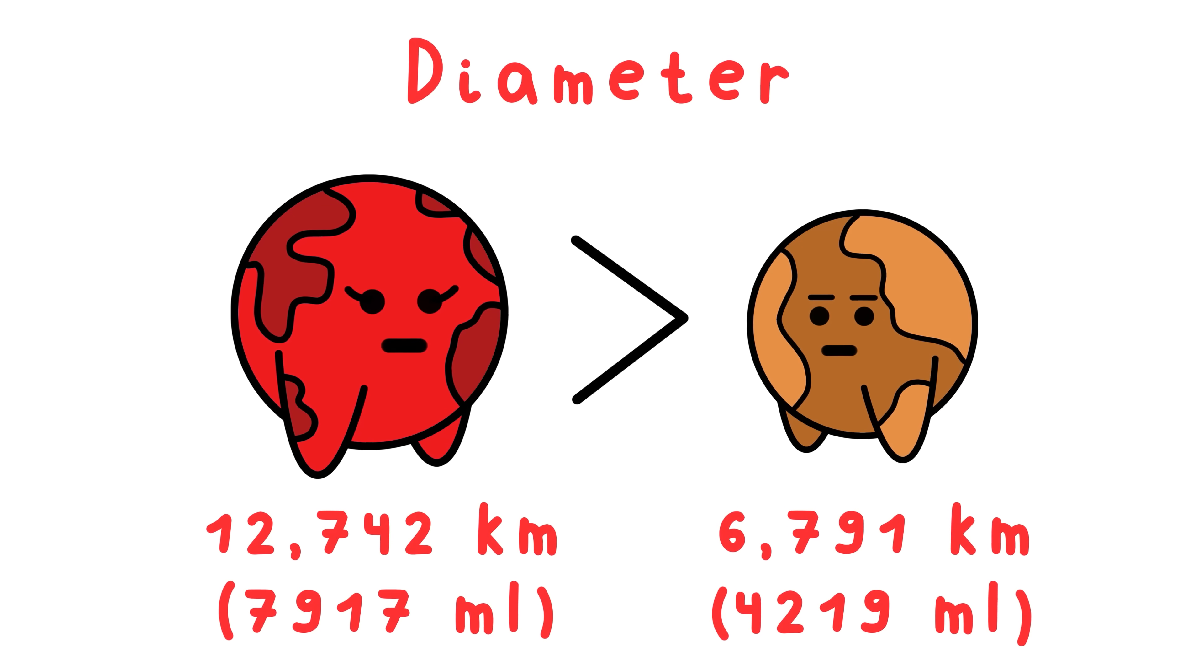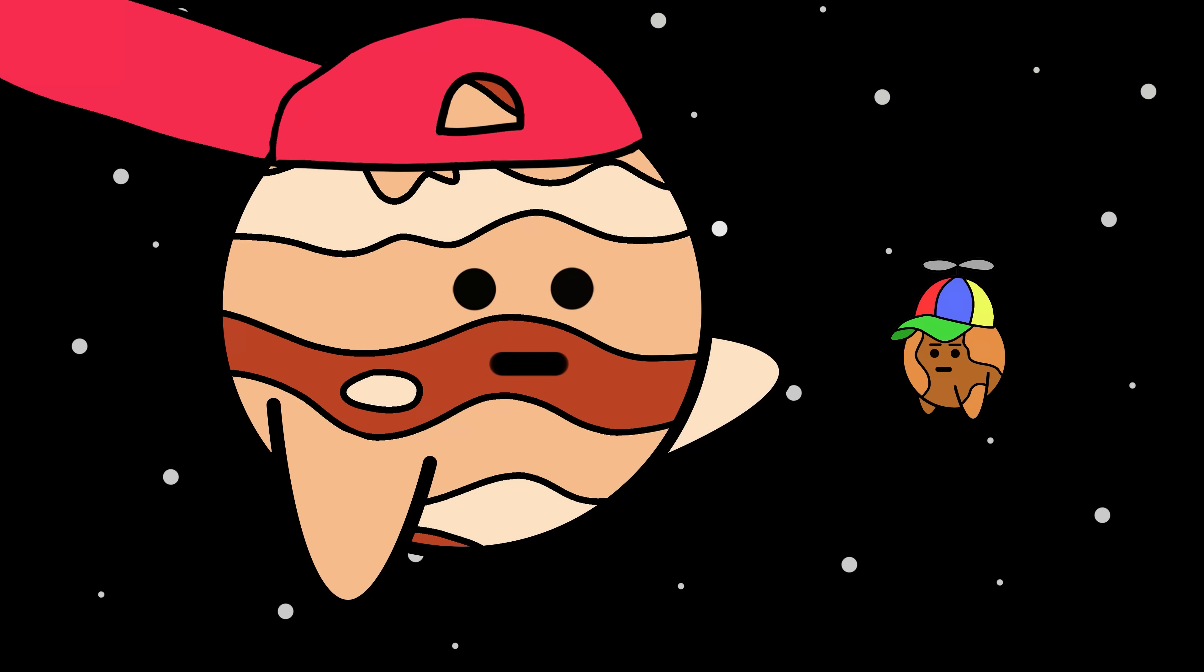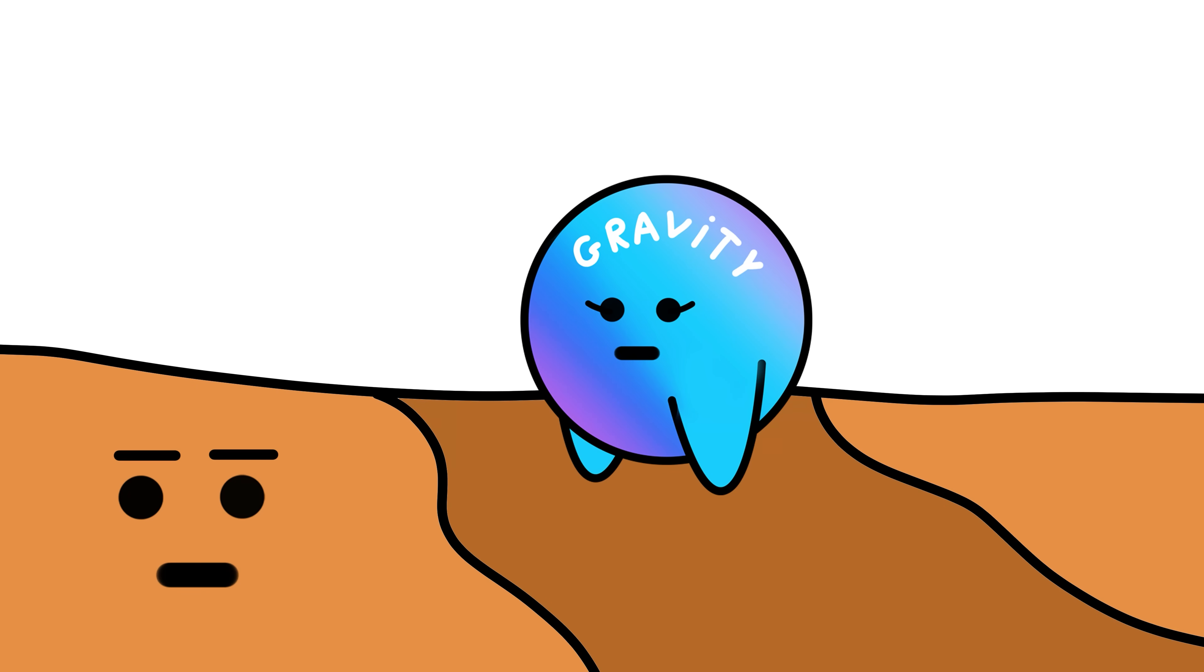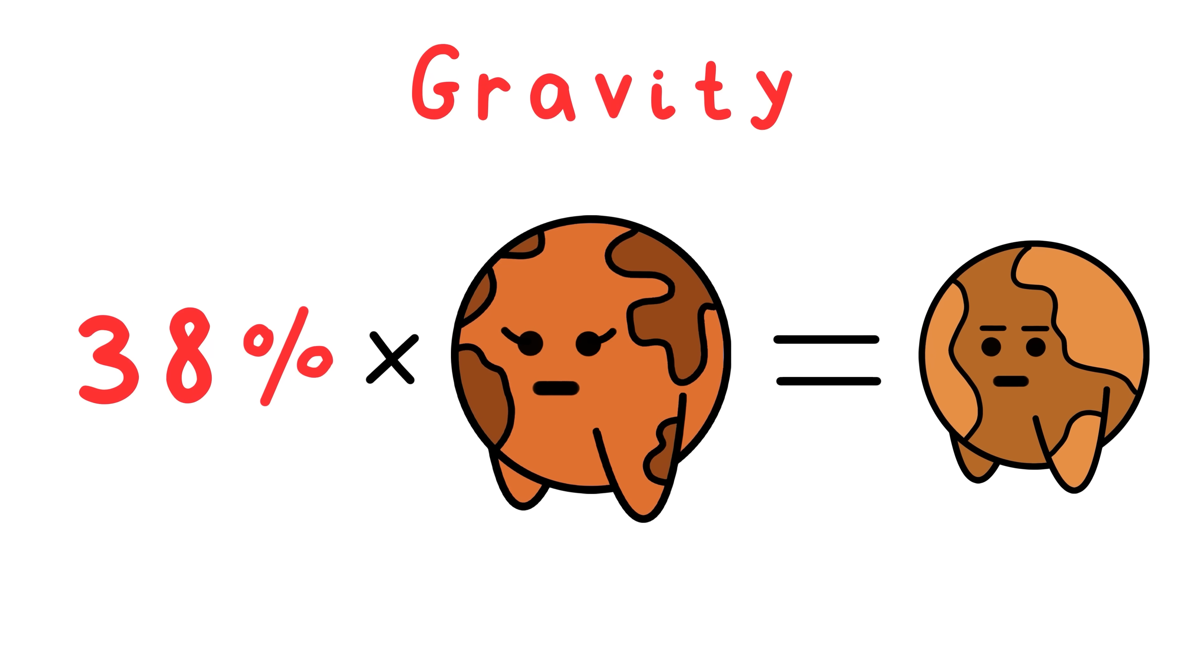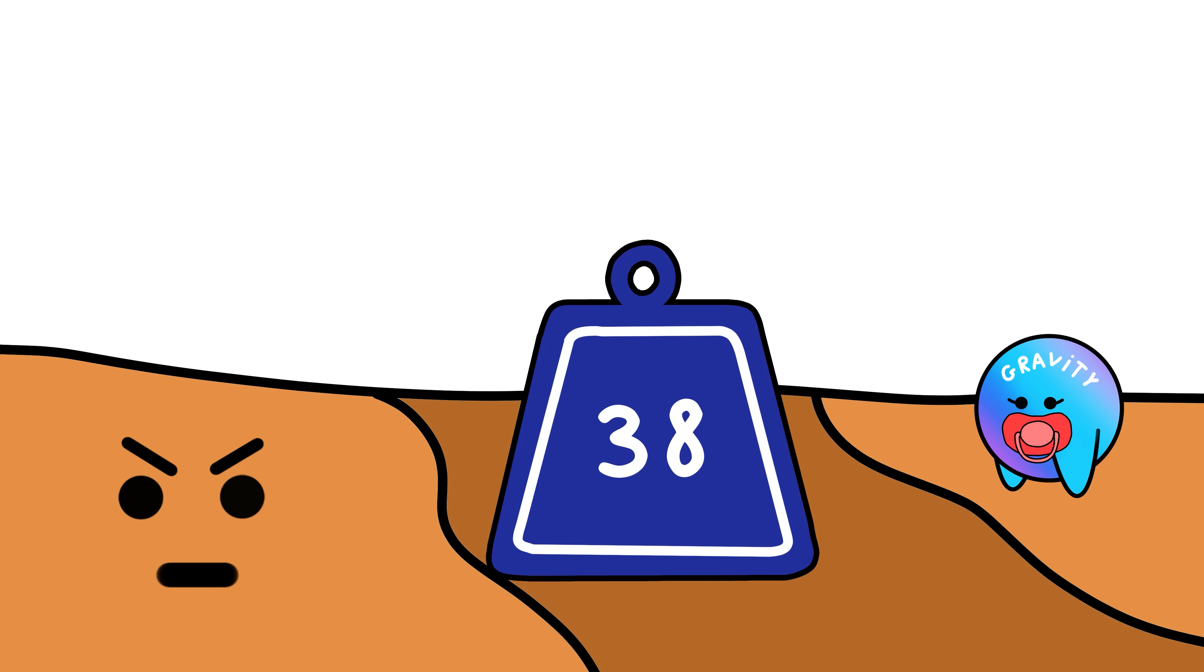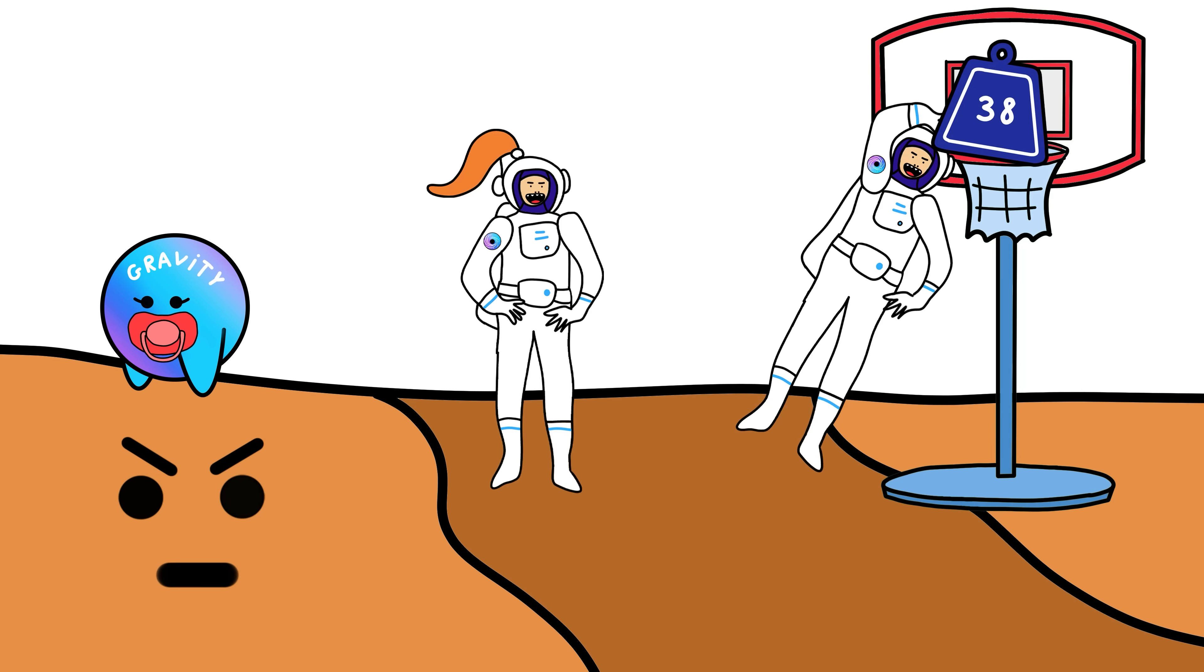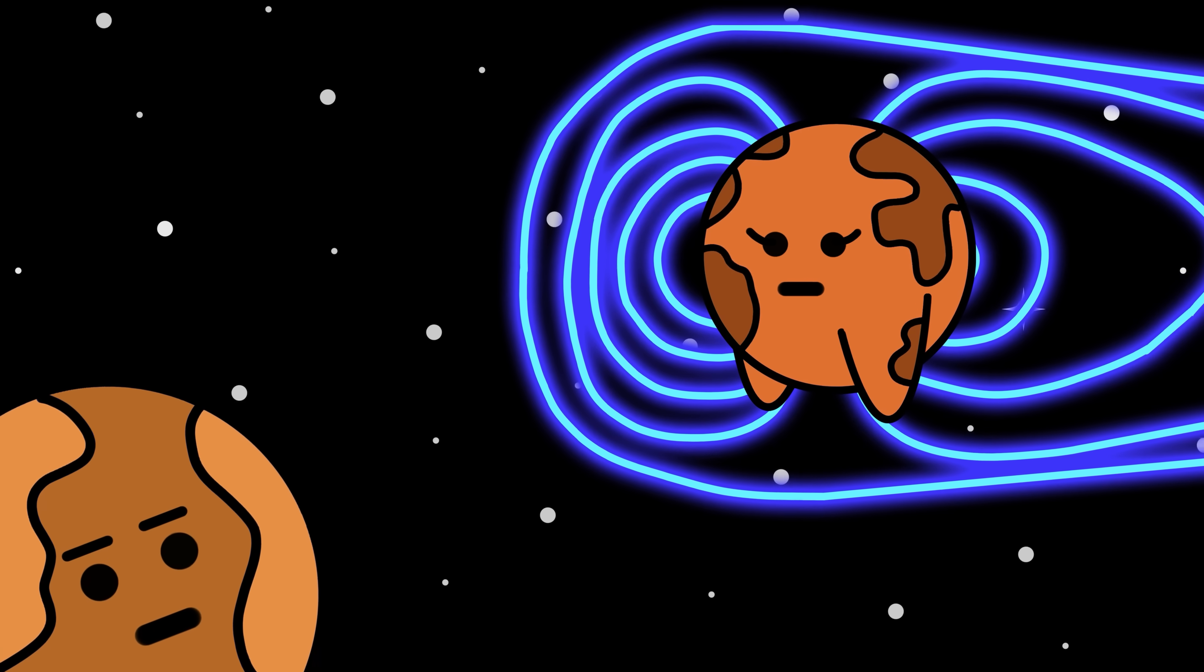Your diameter is 6,791 kilometers compared to Earth's 12,742. That's like being the short kid in class who never hit their growth spurt because a tall kid kept stealing your lunch. This size difference means your gravity is pathetically weak at 38% of Earth. Something weighing 100 pounds on Earth would only weigh 38 on you. You'd literally make them feel like they were constantly floating around. It's embarrassing.